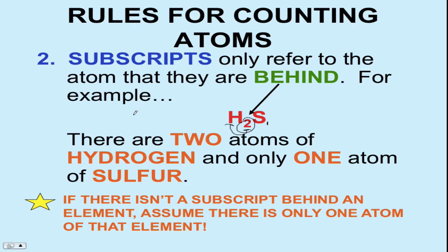You guys know this one — H₂O. The subscript here is two. You know that water is made up of two hydrogens and only one oxygen. That's example number one for our second rule.